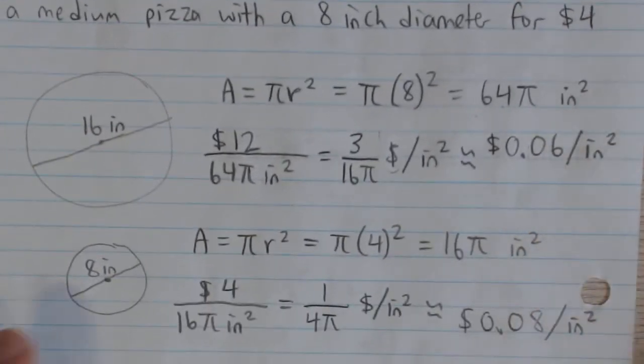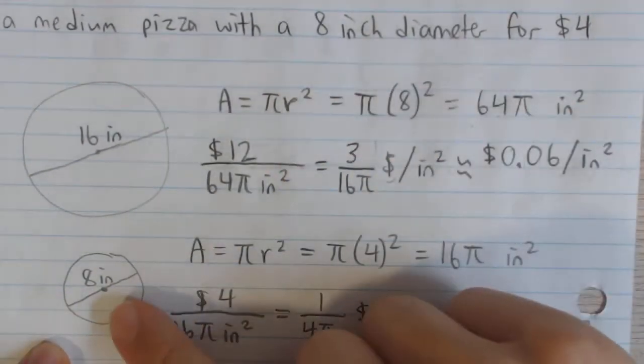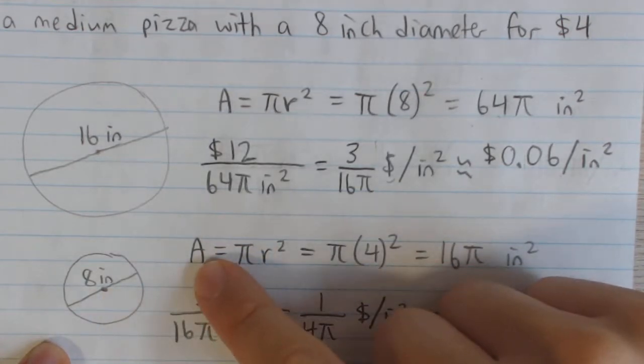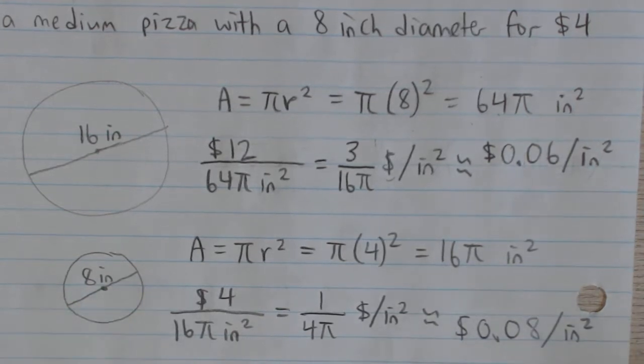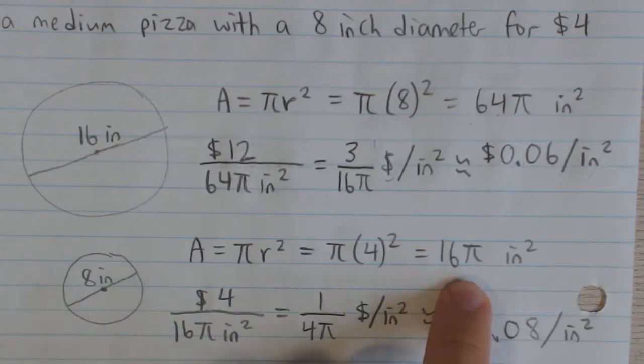For the small pizza, it's an 8 inch diameter. Our area is π times 4 squared, because the radius is half the diameter. So that gives us 16π inches squared - that's the area of the pizza.